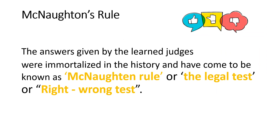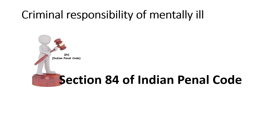Hence, this case was put forth in front of learned judges, who were asked various questions regarding the criminal responsibility of an insane or mentally ill person. The judges came up with answers that were immortalized in history and have come to be known as McNaughton's rule, or the legal test or right-wrong test. Based on McNaughton's rule only, we have Section 84 of the Indian Penal Code, dealing with the criminal responsibility of a mentally ill person.